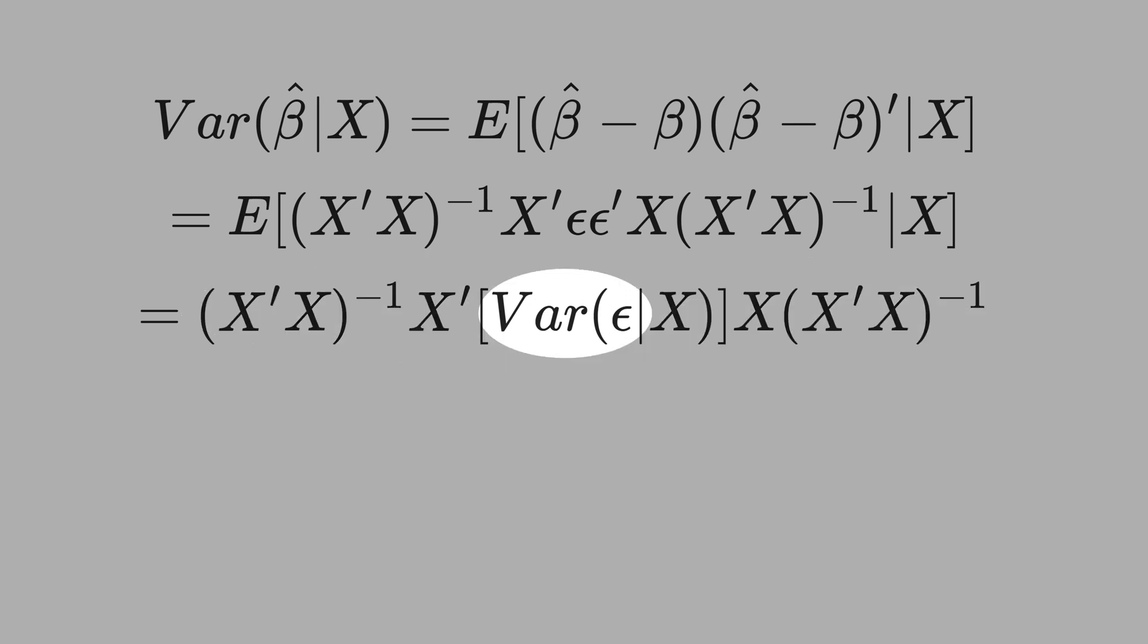See that the variance of the error is the expected value of this term here. Error times error is the variance. See that this is the conditional variance of the error, conditional to X. This conditional X comes from here. Note that to calculate the conditional variance of beta hat, we need the variance of the error term.